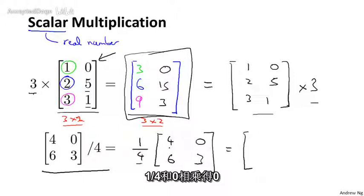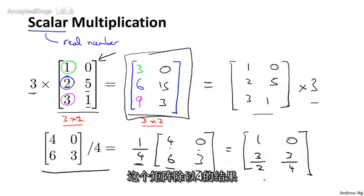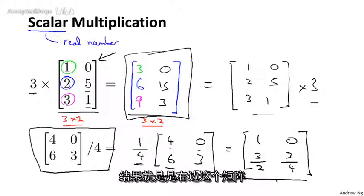And so you can figure the answer. The result of this product is 1 quarter times 4 is 1, 1 quarter times 0 is 0, 1 quarter times 6 is 3 halves, and 1 quarter times 3 is 3 quarters. And so that's the result of computing this matrix divided by 4.